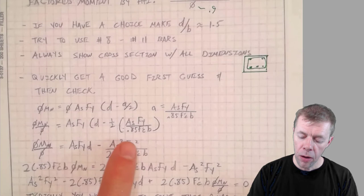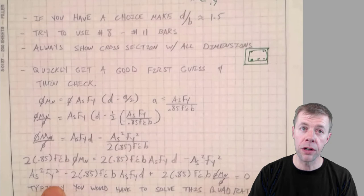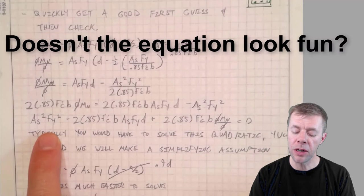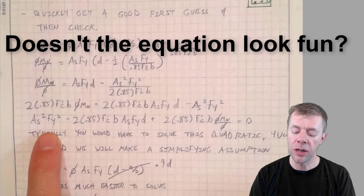More algebra down here at the bottom. And why we would do all this is this is kind of the big nasty equation we would need to solve to figure out how much steel we needed if we knew all these other parameters—if we knew fy, if we knew f'c and beta.